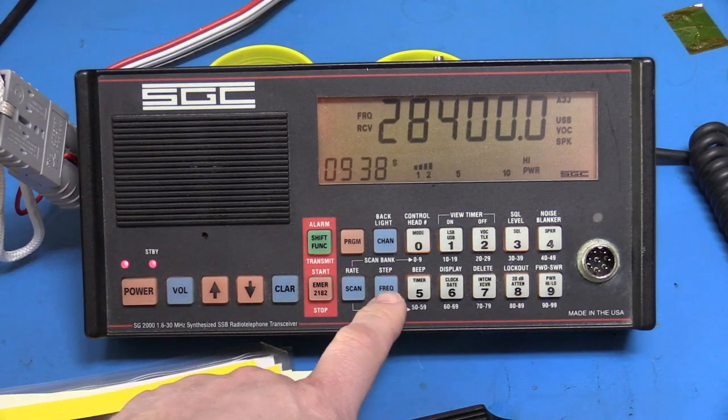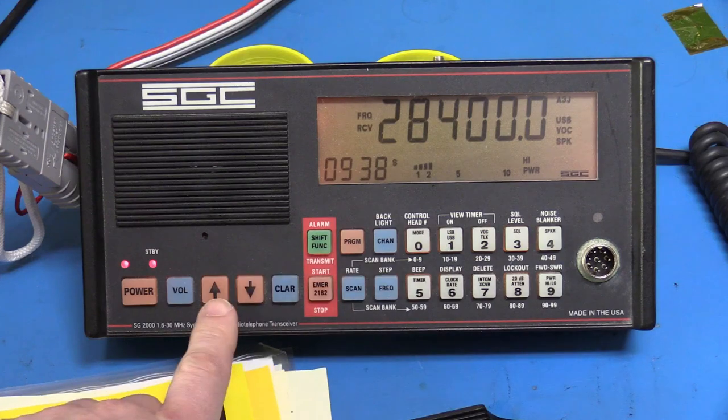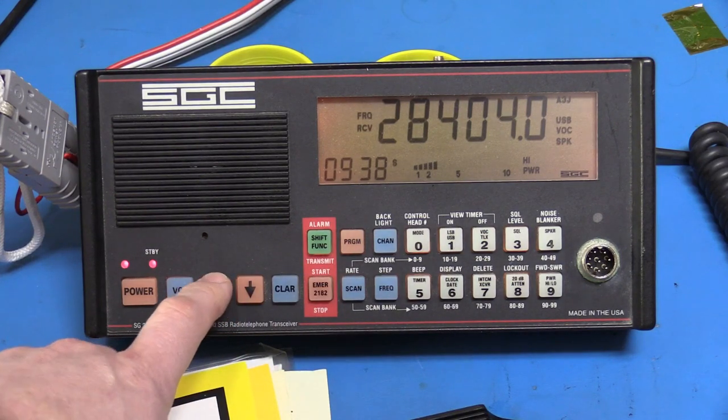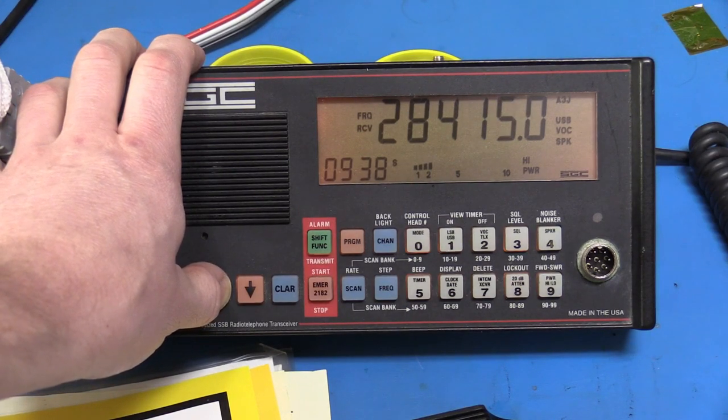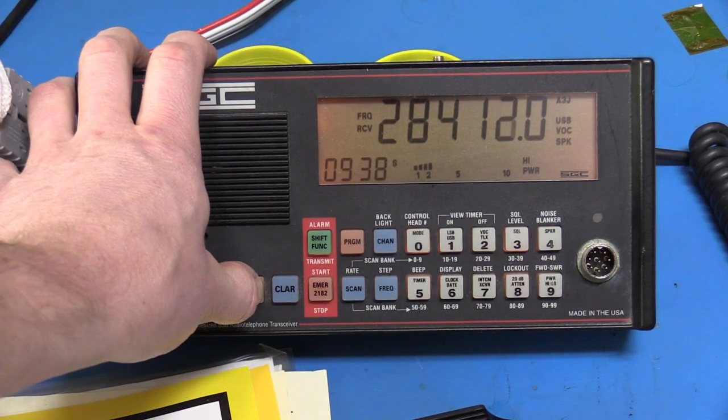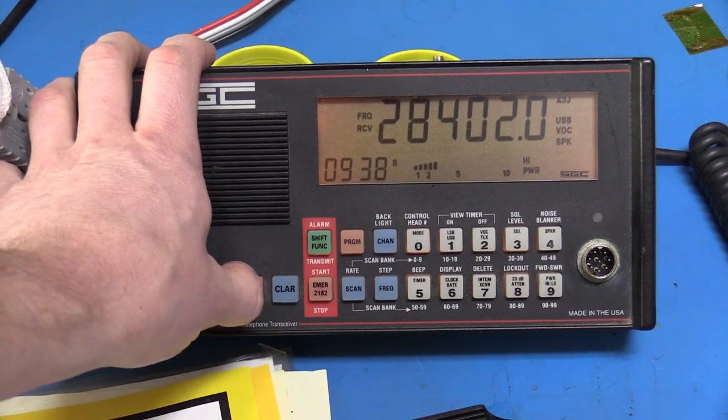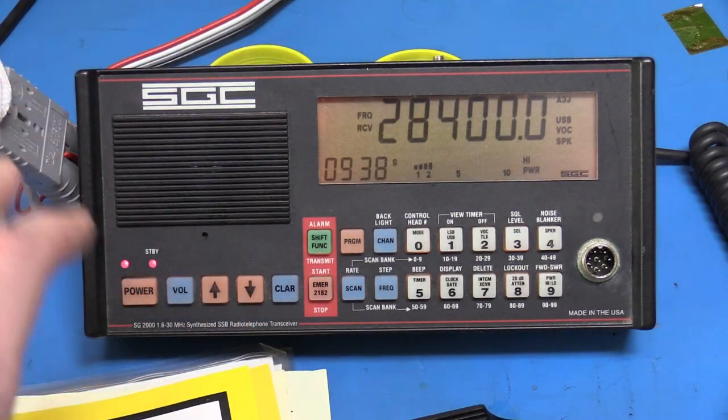To tune, we press frequency and we use the up-down buttons. Very simple. You can hold the button down to tune rapidly. And you can set the tuning step, which I think is a nice feature. Some marine radios don't have this.